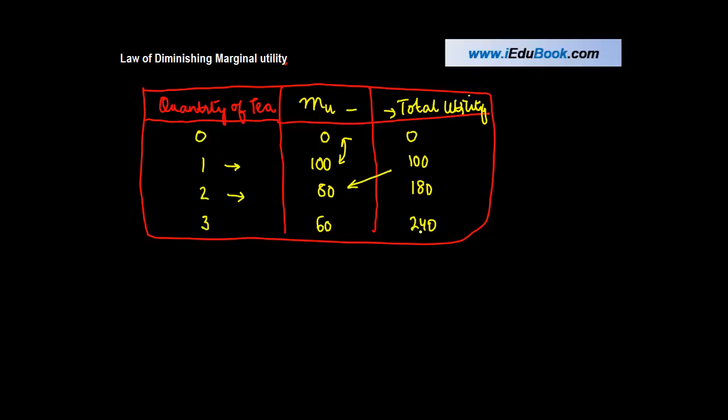What the law of diminishing marginal utility says is that as the consumption of a particular commodity increases - let's say from zero to one, the movement was 100. When the second consumption happened, the marginal utility fell down from 100 to 80. When the consumption increased from two to three, this further came down to 60. So the marginal utility in each of these cases is going down.